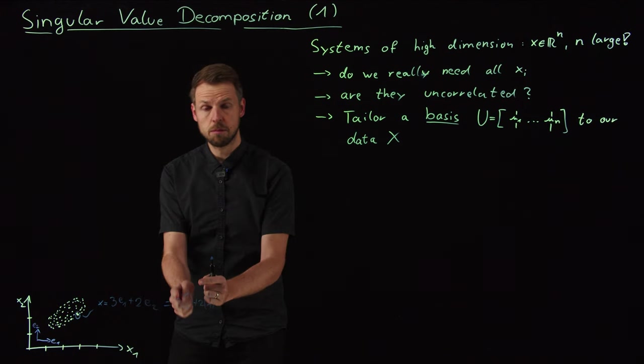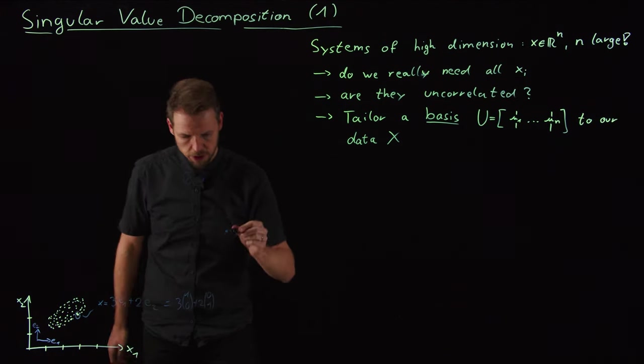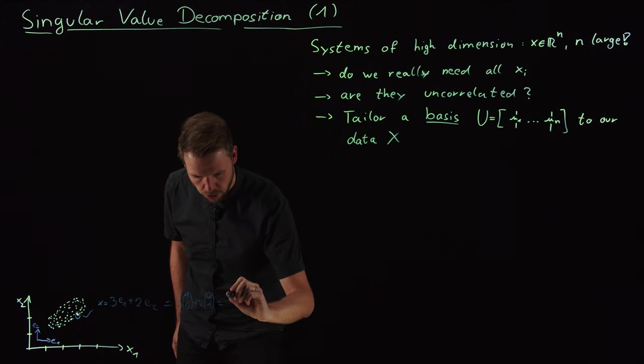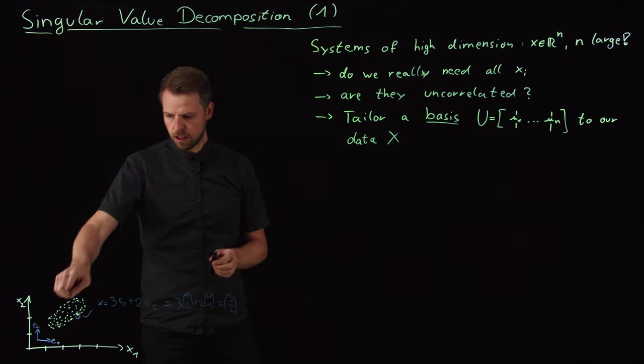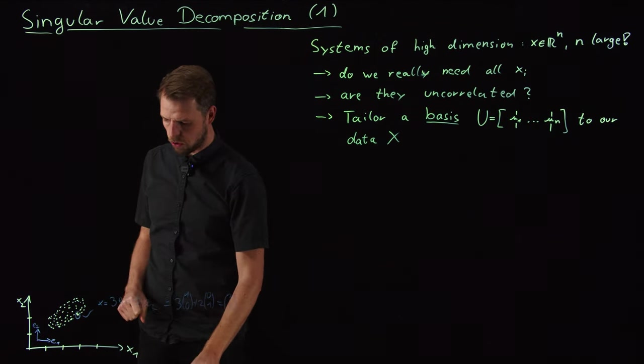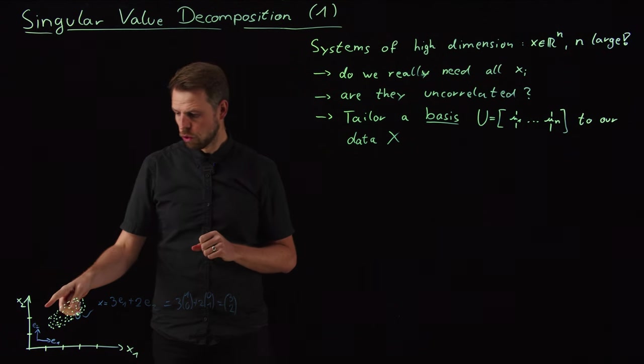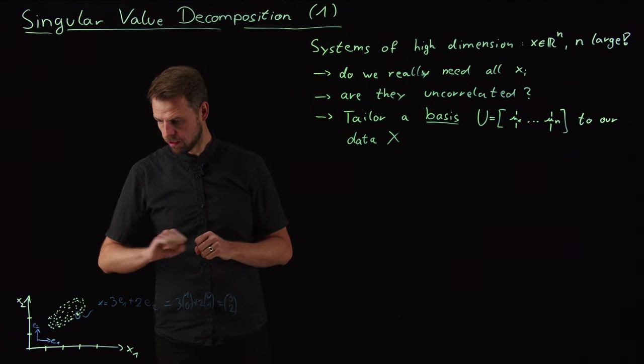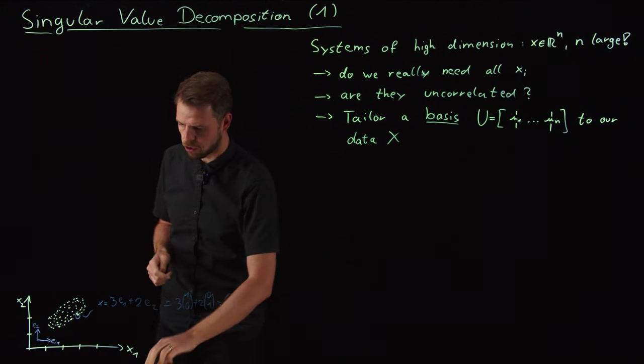Or I can rewrite or explicitly write them out. So this would be three times (1,0) plus two times (0,1). And so you see, well, we need obviously both components to make a correct statement for the value of this point that is three and two. But here's the thing.